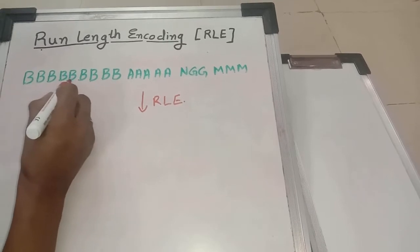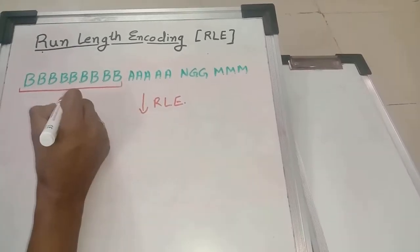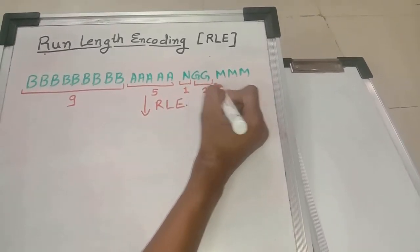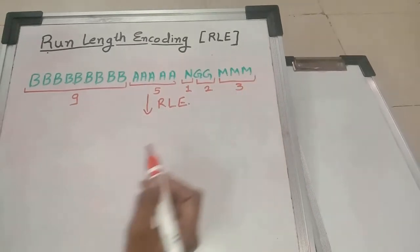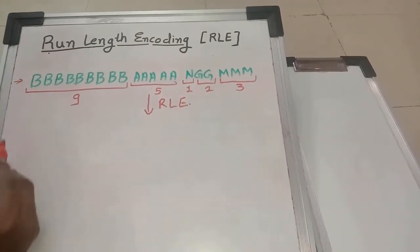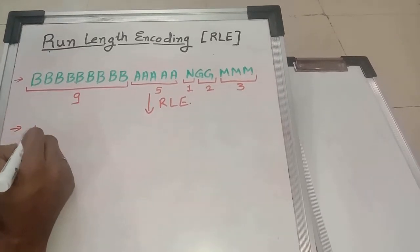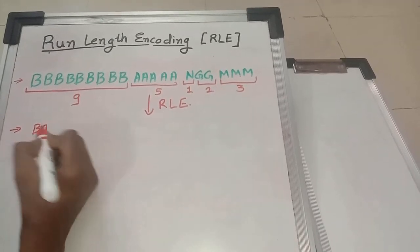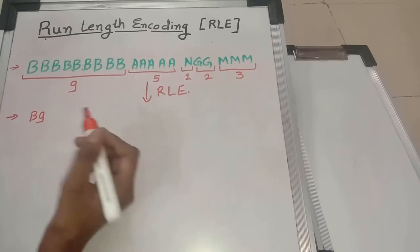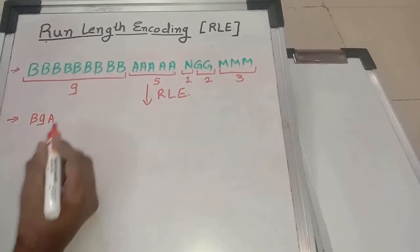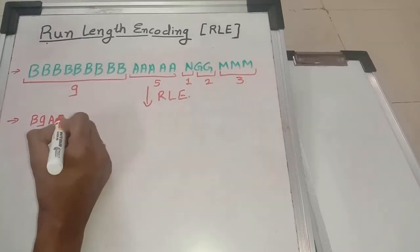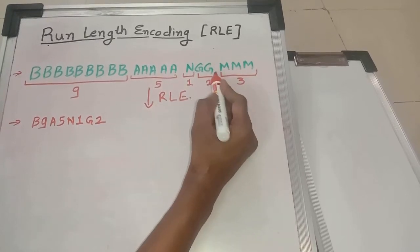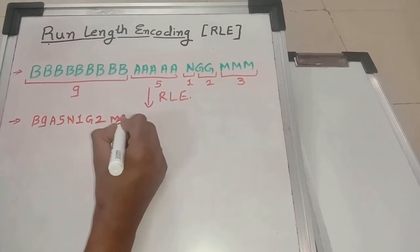B is occurring 9 times, A is occurring 5 times, N is occurring once, G 2 times, and M 3 times. So instead of sending this string as is, we will send B9, A5, N1, G2, and M3.